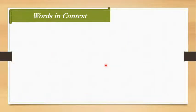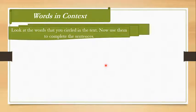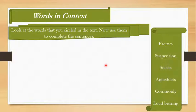Moving on, we have words in context. The question says look at the words that you circled in the text, now use them to complete the sentences. I have mentioned them for your convenience. These are the words that we circled in our text while reading the explanatory text 'Overcoming Earth's Obstacles': factors, suspension, stacks, aqueducts, commonly, and load bearing.